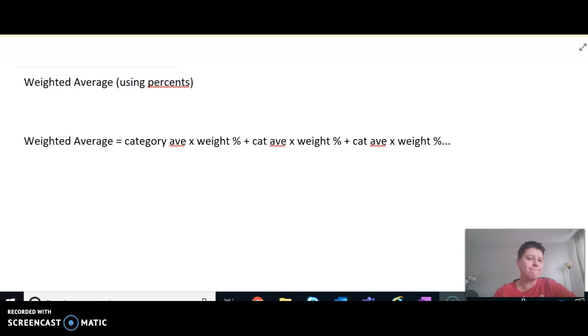Think about a basic average where we have five numbers, they're all weighted equally. We add them together, divide by how many there are. That's the normal way to find the average or the mean of a set of numbers. Well, what happens when each of those numbers has a different weight attached to it? So they're not all equal.